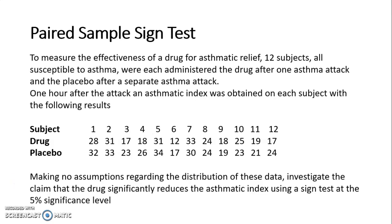Making no assumptions regarding the distribution of these data, investigate the claim that the drug significantly reduces the asthmatic index using a sign test at the 5% significance level. Notice this question specifies to use a sign test, but doesn't remind you that it's a paired sign test. So by looking at the data, we can see each of the 12 subjects has a pair of data values, one for the drug and one for the placebo.